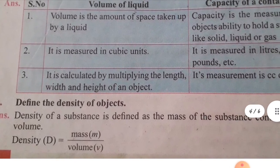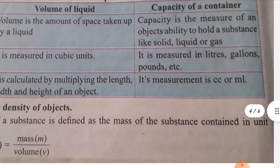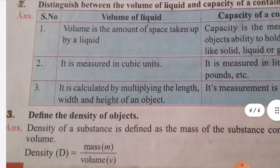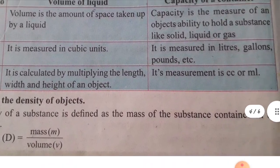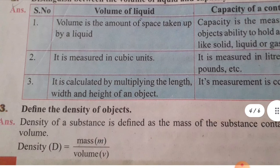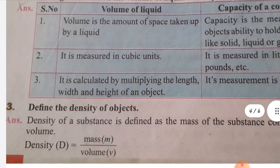Third brief answer: define the density of an object. Density of a substance is defined as the mass of the substance contained in unit volume. Formula: Density D = mass divided by volume, i.e., D = m/v.